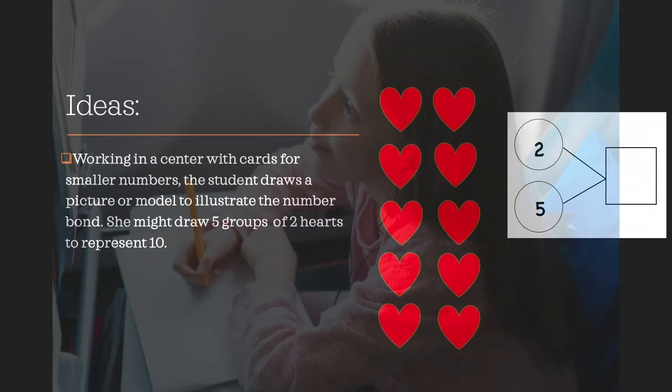Another idea is that students can work in a center, pull a card up with maybe the smaller products that you're working with. They could draw a picture to illustrate the number bond that they're seeing. So she might draw five groups of two hearts. So I see how many groups, five, there's two in every group. So how many hearts do I see all together? I see ten.